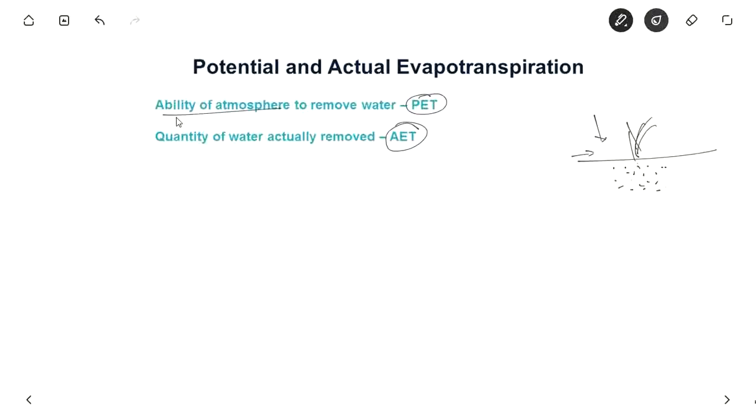So the ability of atmosphere to remove the water, that is known as potential evapotranspiration. It is nothing but maximum water which can be taken by the atmosphere if infinite supply of water is there to the crop. And actual evapotranspiration is the quantity which is actually removed. So sometimes we may provide less water so the evapotranspiration needs will be little lesser than the maximum available. So actual evapotranspiration is always less than or equal to potential evapotranspiration.